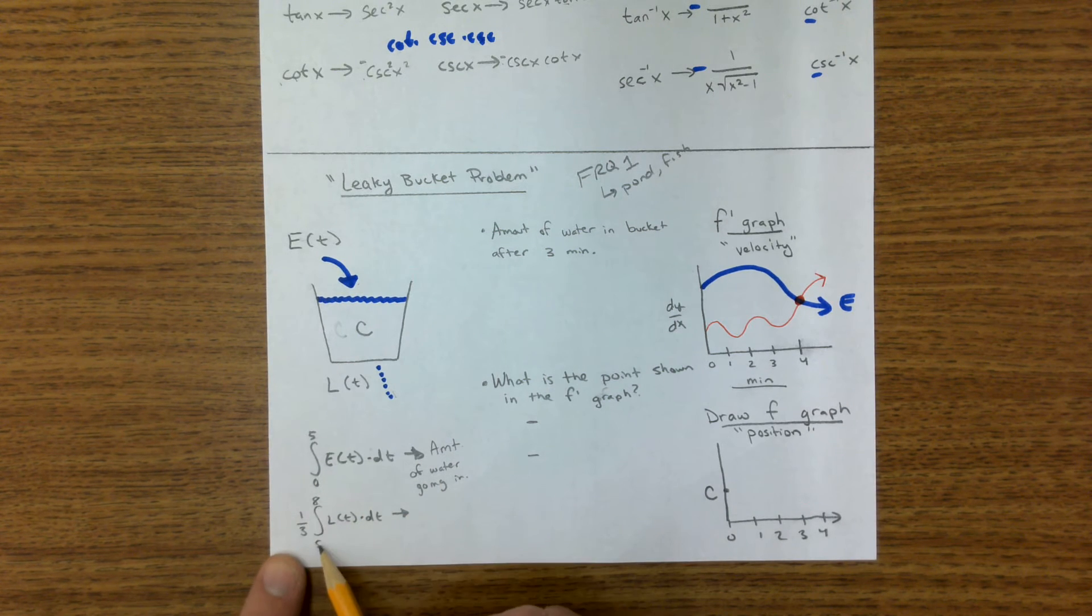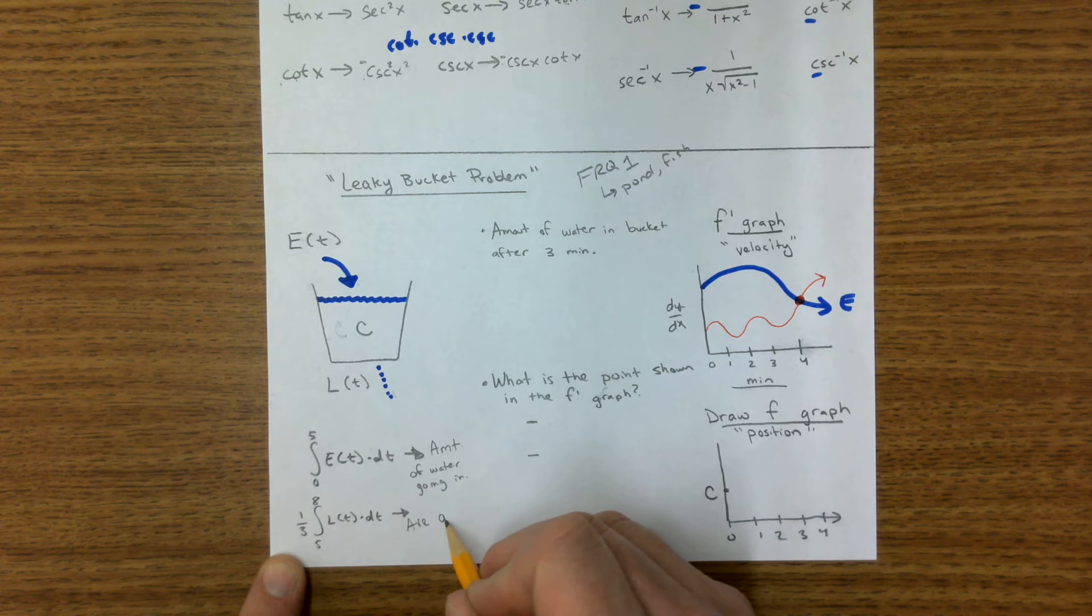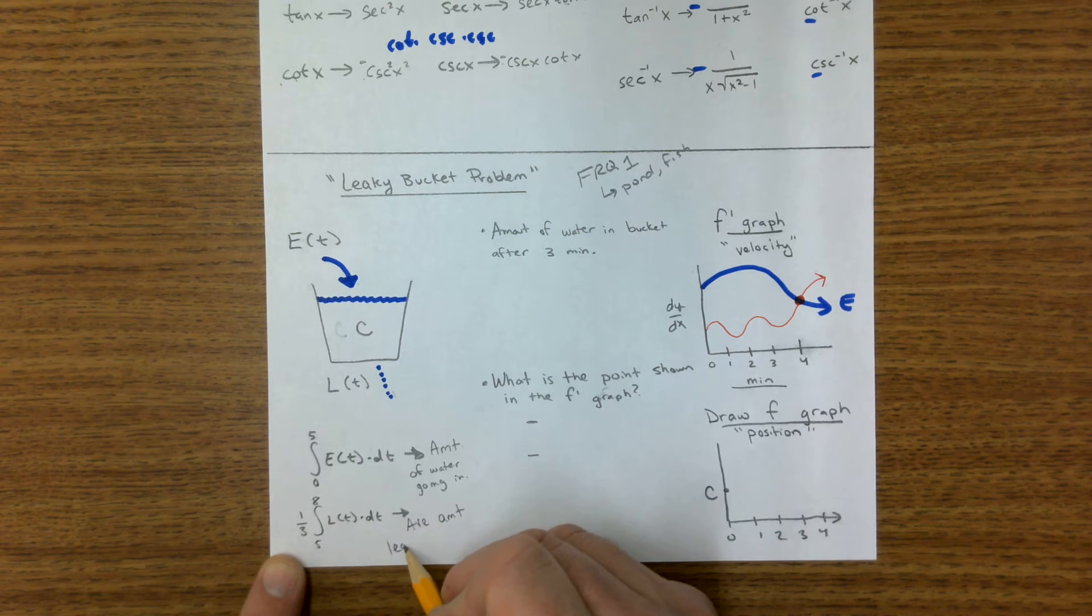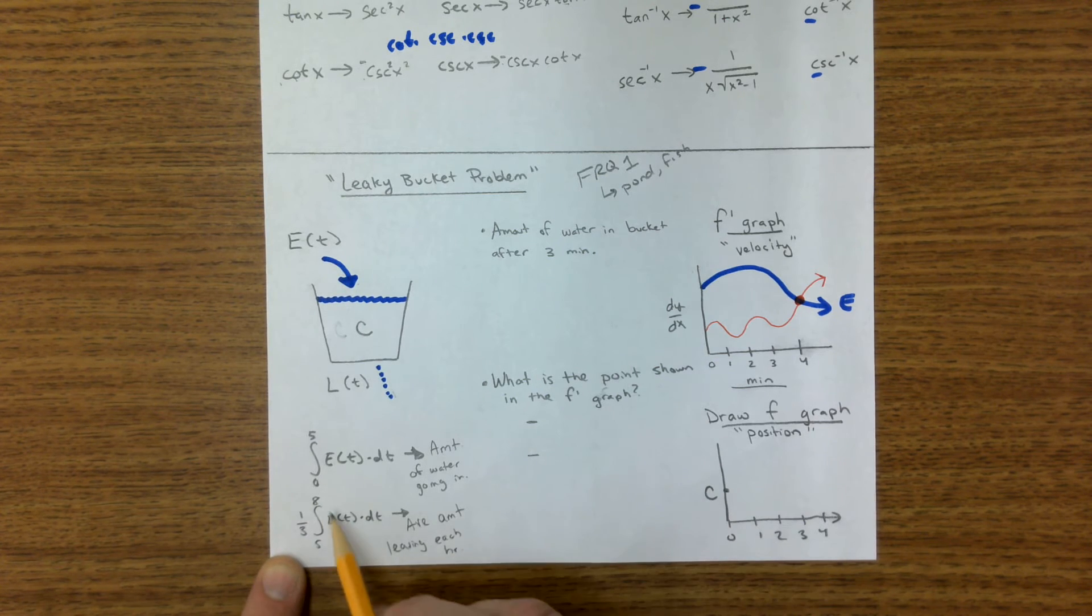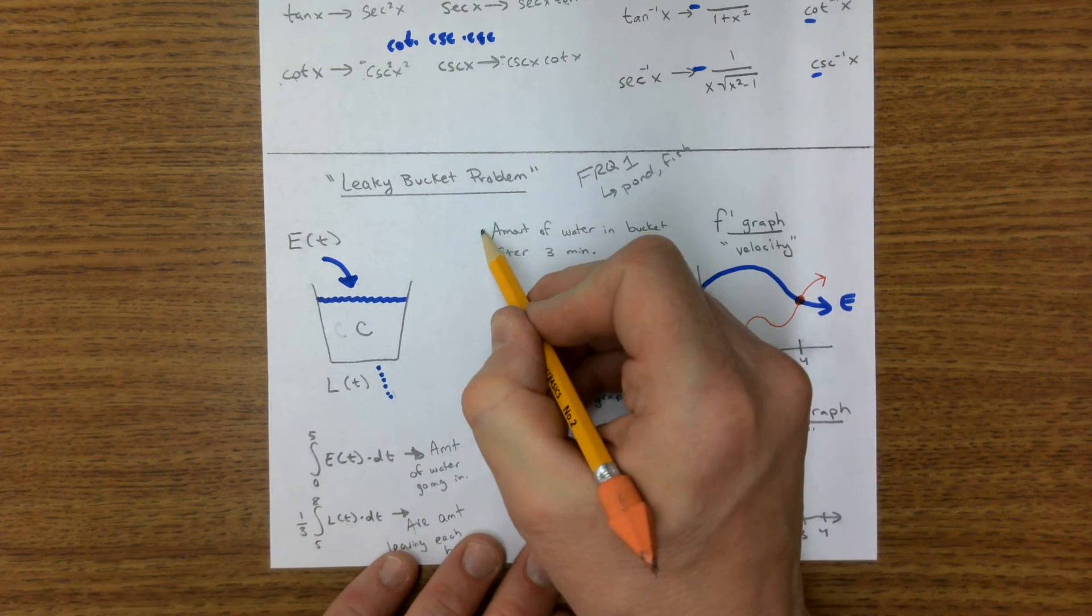Well, what would it be if I integrated from five to eight of the leaking function, but I times it by one third? Well, that would be the average amount leaving each hour over that interval. So average amount here, total amount there.